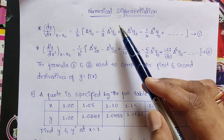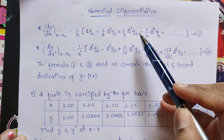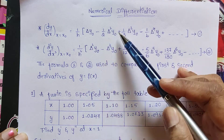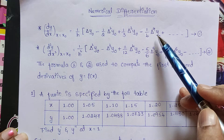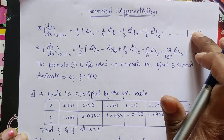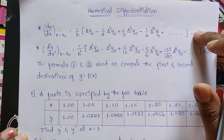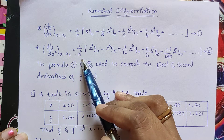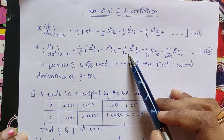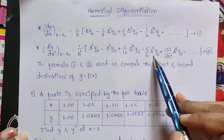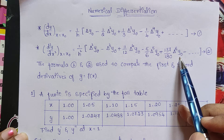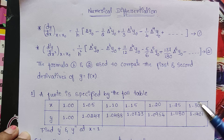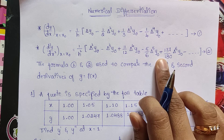In the previous class, I have given some definitions on numerical differentiation and some formulas. Here are some formulas. dy/dx at x = x₀ equals 1/h times [Δy₀ − (1/2)Δ²y₀ + (1/3)Δ³y₀ − (1/4)Δ⁴y₀ + ...]. This is the first formula to find the first derivative of y = f(x). The second derivative formula is: d²y/dx² at x = x₀ equals 1/h² times [Δ²y₀ − Δ³y₀ + (11/12)Δ⁴y₀ − (5/6)Δ⁵y₀ + (137/180)Δ⁶y₀ + ...]. The values 11/12, 5/6, 137/180 are given in the formula. Those formulas were derived in the previous classes.